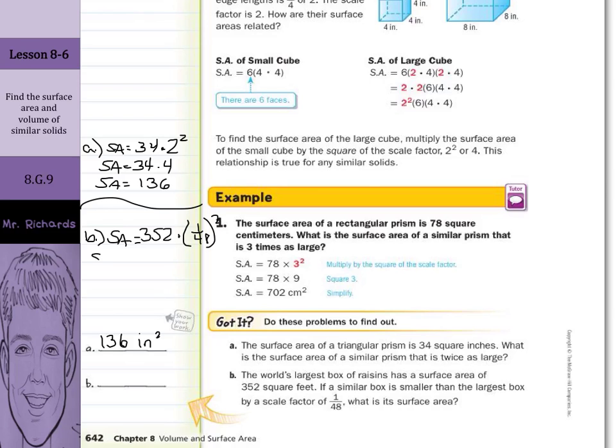So surface area is going to equal 352 times, well, 1 squared is 1 over 48 squared is 2,304. When you square a fraction, you square both the numerator and the denominator. And now when we multiply these together and simplify, you could get the fraction answer of 11/70ths or just 0.15, 15 hundredths feet squared. And we'll just go with the decimal, 15 hundredths feet squared.